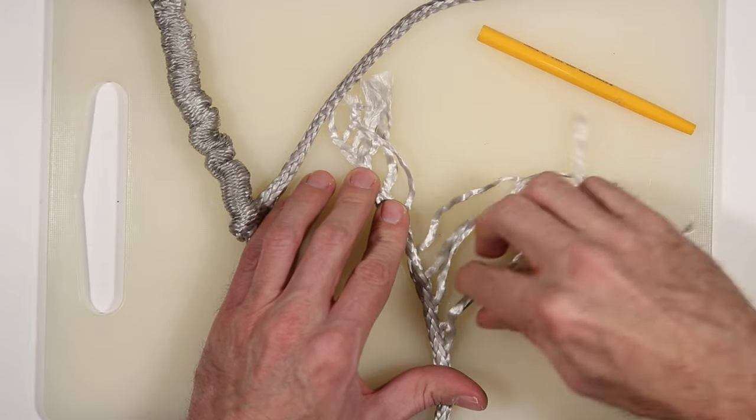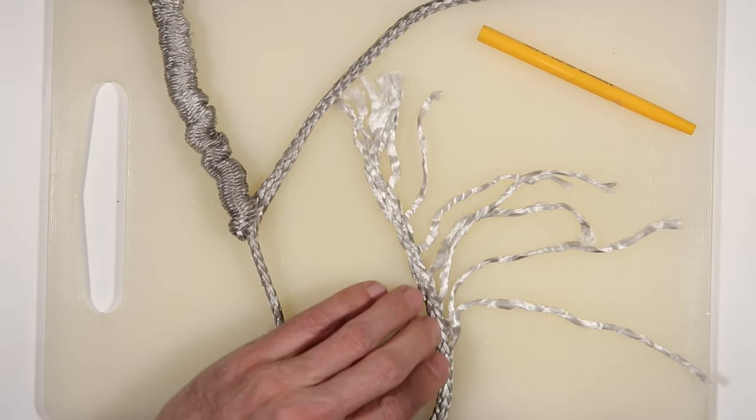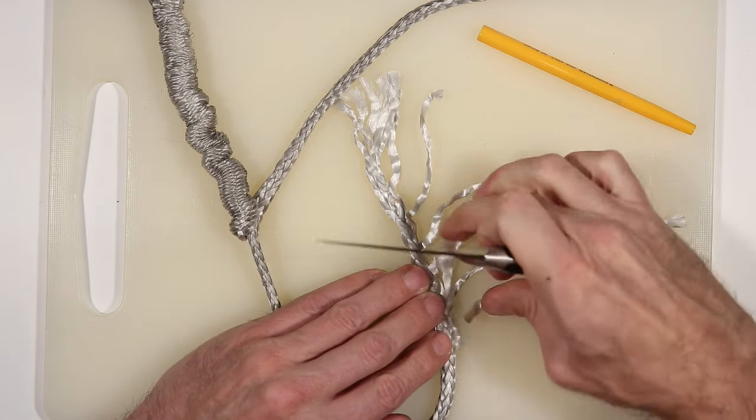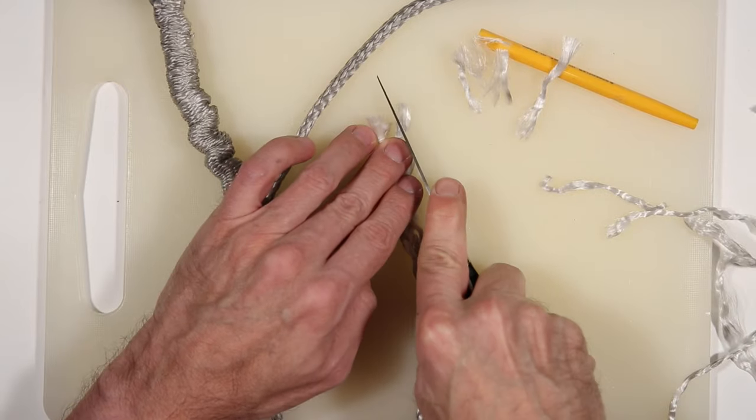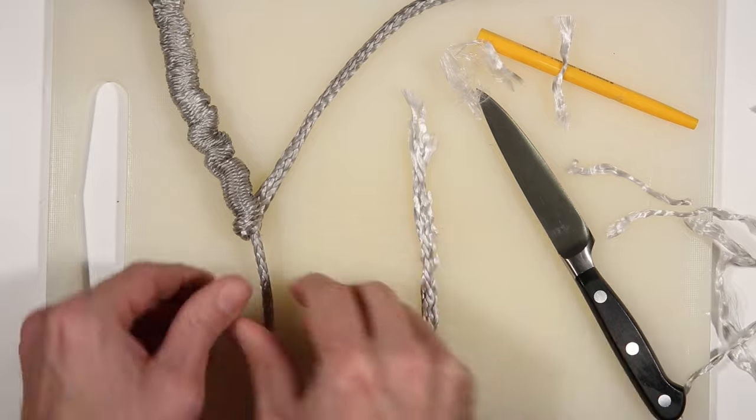At this point you can use scissors, but Dyneema has very fine yarns in it and it can bind in the blades of the scissors. You'll see now the rope tapers very nicely.